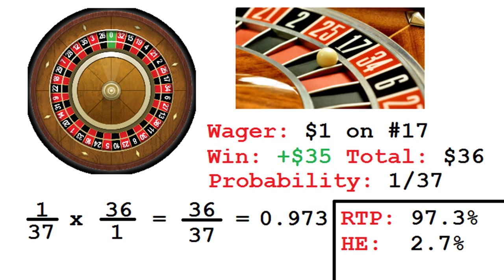Let's use a single zero roulette wheel as another example. You feel lucky and make a $1 bet on number 17. There are 37 total possible outcomes, 0 through 36, and one of them is a winner. The probability of winning your wager on 17 is 1 over 37. The total payoff is $36 — your $1 bet plus $35 in winnings. Multiply the two together, and the result is 36 over 37, a return of about 97.3%, or a house edge of 2.7%.